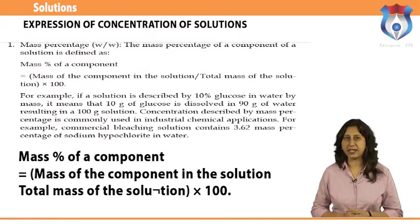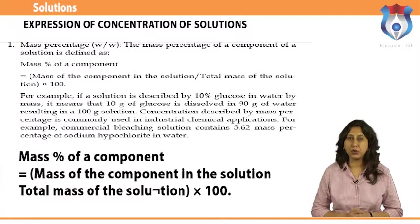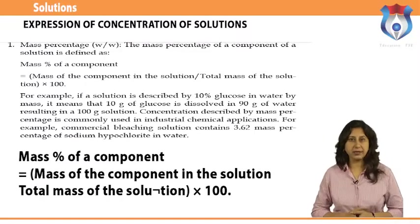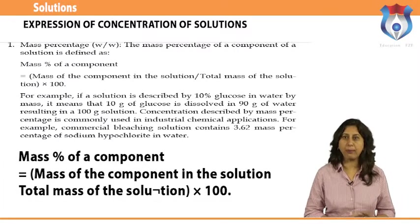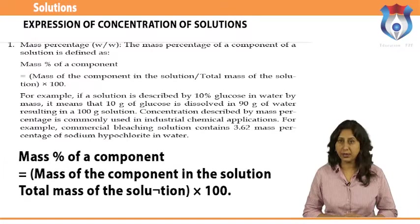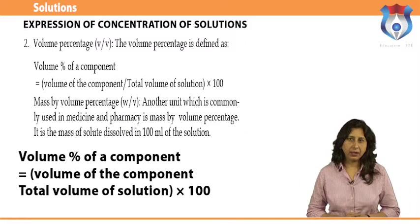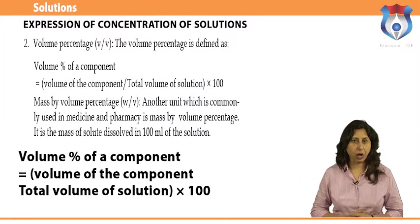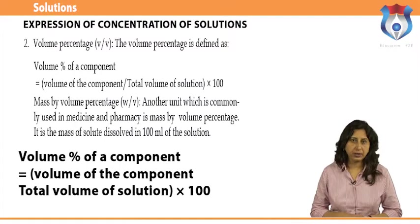Mass percentage (W/W): The mass percentage of a component of a solution is defined as — mass percent of a component equals mass of the component in the solution divided by total mass of the solution, multiplied by 100. Volume percentage (V/V): Volume percent of a component equals volume of the component divided by total volume of solution, multiplied by 100.